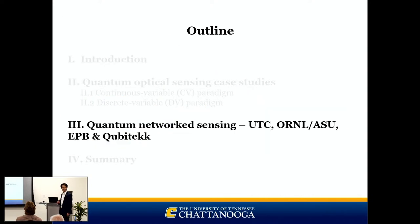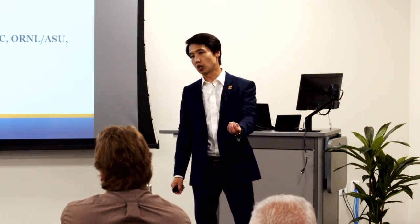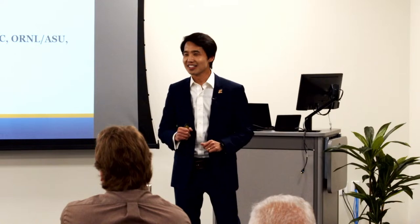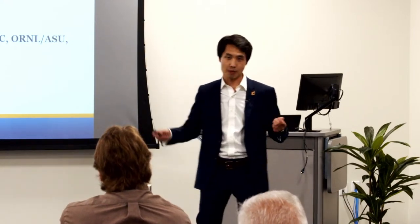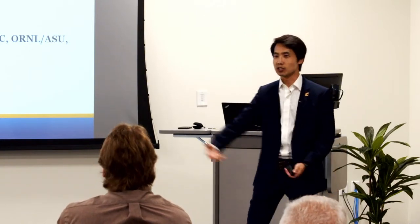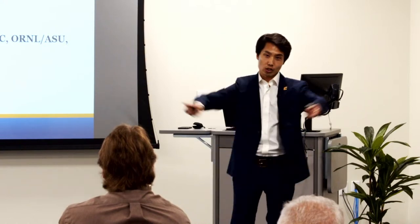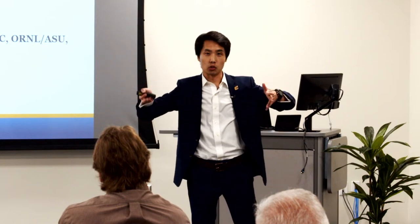Now, my research plan: quantum network sensing with EPB and Qubinac. All the showcases described were for single-parameter measurement at a single location — absorption, fluorescence, or image contrast at one place in the lab. How about measuring multiple parameters at multiple locations? Naturally, a quantum network comes in. We plan to distribute our entanglement — splitting entangled beams from two parties into four or more branches.